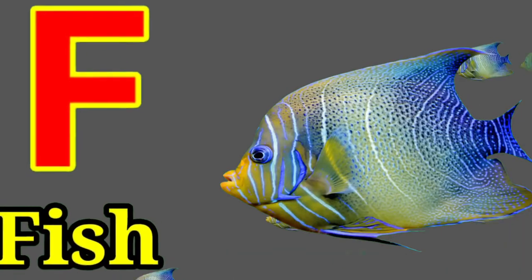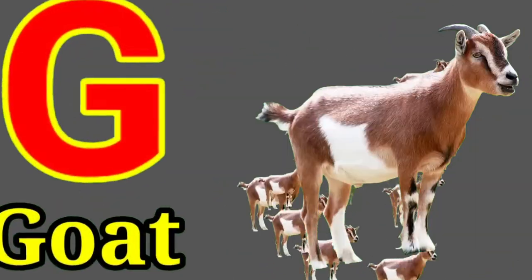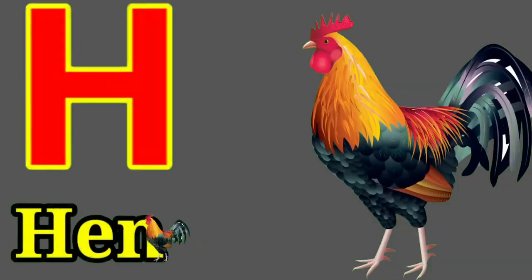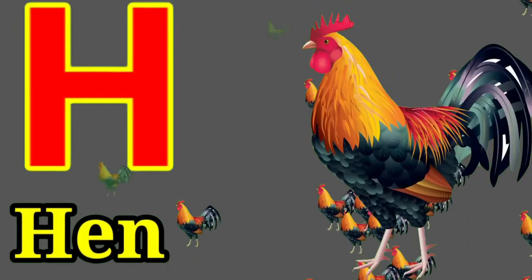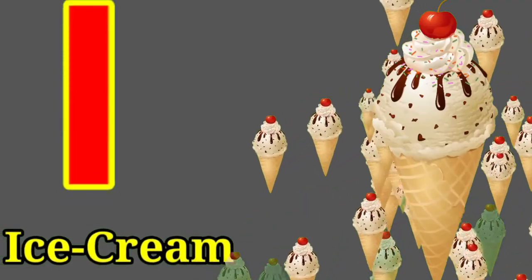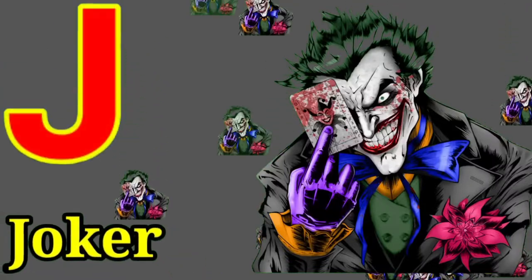F for fish, G for goat, H for hen, I for ice cream, J for joker.